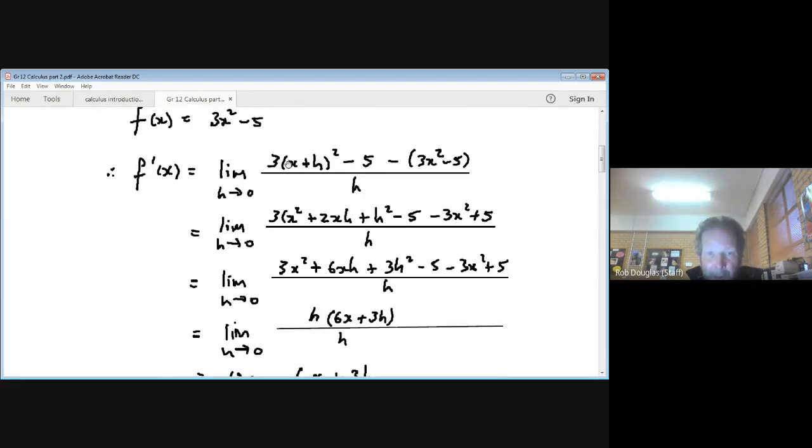Then I multiply x plus h times itself. And I get x squared plus 2xh plus h squared. And here I can see I'm going minus x squared and minus minus 5. Be careful of that. That's plus 5. The 3 gets multiplied by these 3 things here. And I get 3x squared, 6xh, and 3h squared.